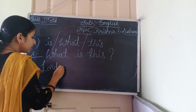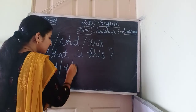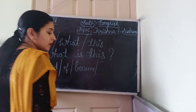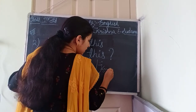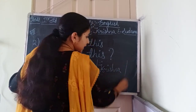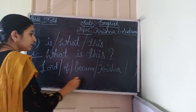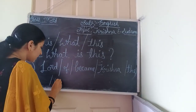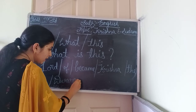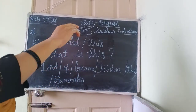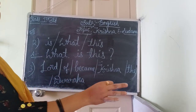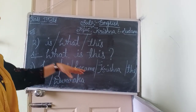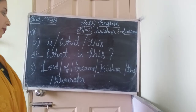The third one — more words: Lord / of / became / Krishna / the / the / Dwaraka. Here you can easily say this is a statement, not a question sentence. The words are shuffled and we need to arrange them in a proper way to make a proper sentence.